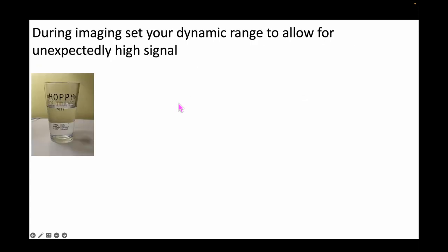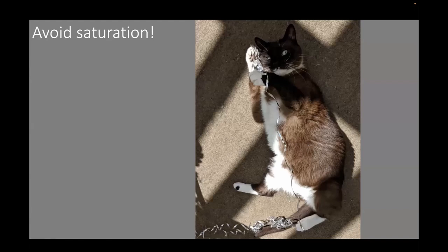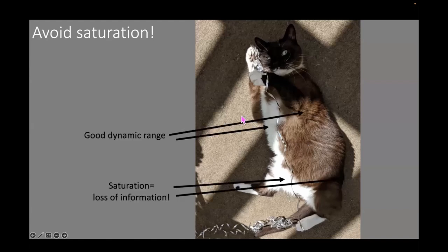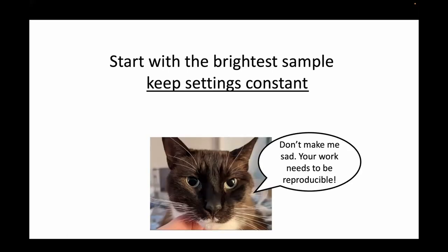A lot of images from research fluorescence slide scanners will give you 16-bit output, and that's much preferred over 8-bit. When you're doing your imaging, it's important to set your dynamic range in a way that allows you to see unexpectedly high amounts of signal. You want to avoid saturation — when that happens, information is lost, either from too much or too little signal. For the love of everything good, start with the right sample and keep your settings constant.